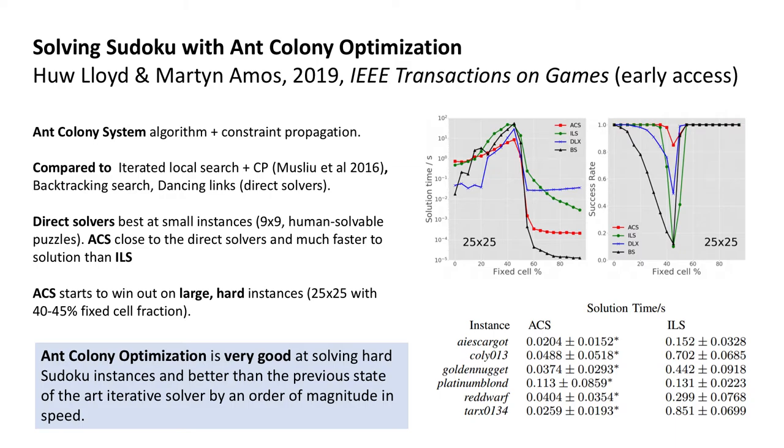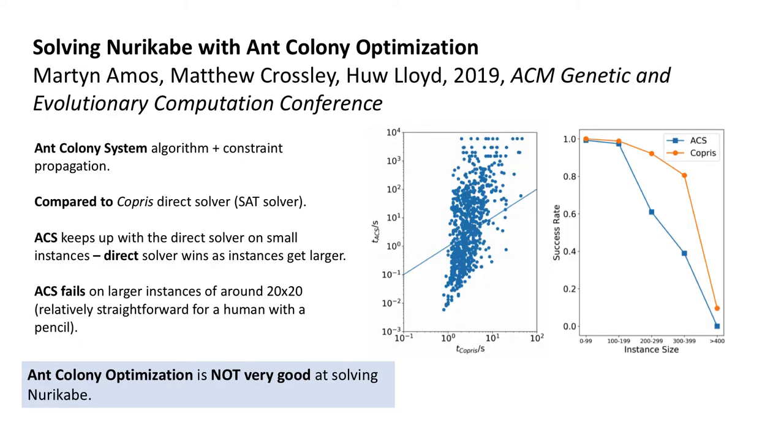So we then tried Nuri Kabi. And by the way, we didn't then do using ant colony optimization to solve Hashi, then Slitherlink and so on. We are going to try and do something a bit more general after this. On the face of it, they're fairly similar. If a human sits down and does a Nuri Kabi, it's about the same difficulty. This time we compared against this state-of-the-art constraint propagation solver called COPRIS, a thing called a SAT solver, industrial strength optimization code. We found that our ant colony algorithm could keep up with this on the small instances. But it falls away a lot quicker than the other one.